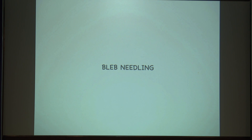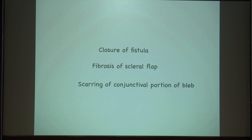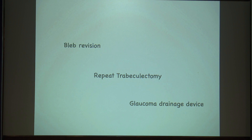Is bleb needling useful? When you see a failing or encapsulated bleb, you do bleb needling and can use mitomycin. The problem is that in the initial period it will work well, but after five to six months it is going to increase fibrosis and ultimately the bleb is going to fail, so you may have to do a bleb revision. Late filtration failure can occur due to closure of fistula, fibrosis of the scleral flap, and scarring of the conjunctival portion. You may have to do bleb revision, repeat trabeculectomy, or go for a GDD.